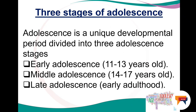Remember, there are three stages of adolescence. It is a unique developmental period divided into early adolescence, between the ages of 11 and 13 years old; middle adolescence, between 14 to 17 years old; and later adolescence, which we refer to as early adulthood. Remember: three stages — early, middle and late.